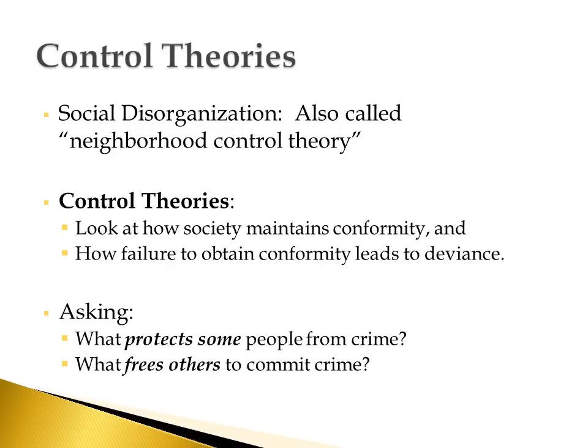The control theories we're going to talk about today have elements that sound a little bit like what you learned about in social disorganization — that's a good thing because these are control theories just like that one is. The only difference is that in social disorganization we learned about neighborhood-level influences like poverty and population mobility, whereas today we're going to talk about things like control in your family, control from your parents, and your bond to school. It's control at the individual level, looking at individual differences between people.